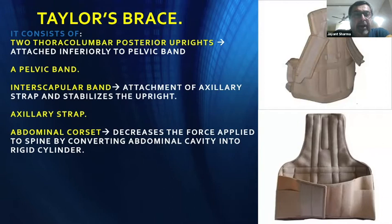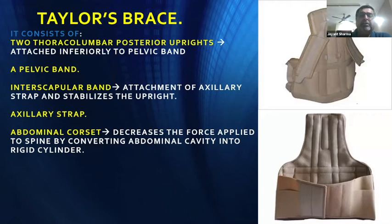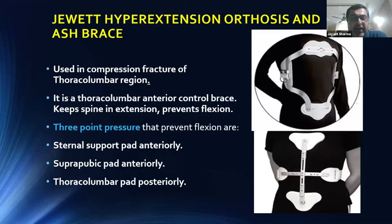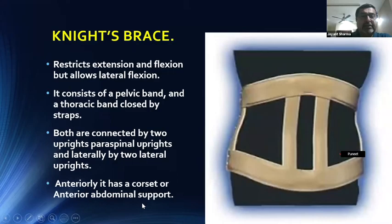The Taylor's brace consists of two thoracolumbar posterior uprights attached inferiorly to a pelvic band, an interscapular band with attachment for axillary straps to stabilize the uprights, and an abdominal corset that decreases force on the spine by converting the abdominal cavity into a cylinder. The Jewett hyperextension orthosis or ASH brace is used in compression fractures of the thoracolumbar area. It is a thoracolumbar anterior control brace that keeps the spine in extension and prevents flexion. The three-point pressure preventing flexion: sternal support anteriorly, suprapubic pad anteriorly, and thoracolumbar pad posteriorly.